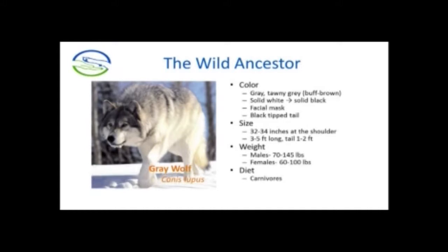The wild ancestor of the domestic dog is the wolf — the gray wolf. Some common characteristics: most of them are gray, tawny gray in color, anywhere from brown to buff type color, a light tan type color. But they may be really any color from solid white to solid black. They're going to have a facial mask — you can think about the facial mask as some of our arctic type breed dogs. And they usually have a black tip on the tip of their tail. They're quite large, about 32 to 34 inches at the shoulder — almost three feet tall. They're three to five feet in length and have long furry tails, maybe one to two feet in length.